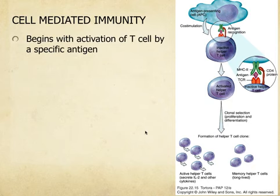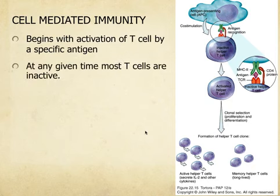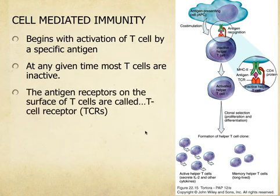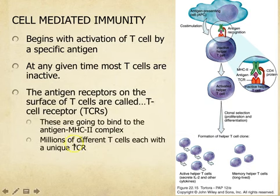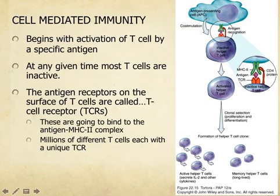A T cell has to be activated by a specific antigen — your T cells are going to be inactive otherwise, and if they're too active, you may have an autoimmune response. The receptors on the surface of T cells are the T cell receptors. You have millions of T cells in your body, each with a unique T cell receptor, so the antigen-presenting cell may visit thousands of T cells before finding one that recognizes the antigen. Once it does, those T cells activate and divide quickly into many new T cells that all recognize that antigen.